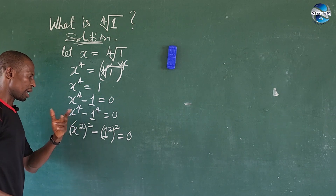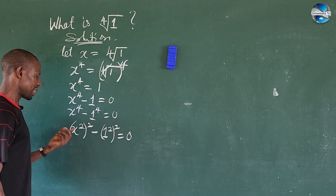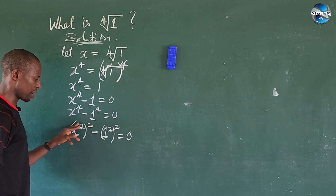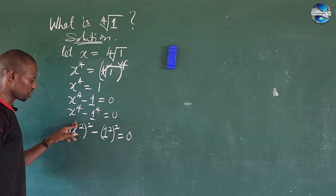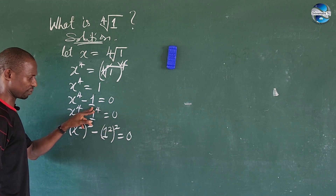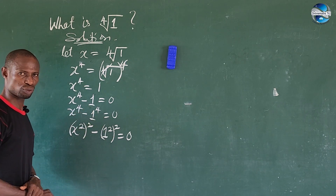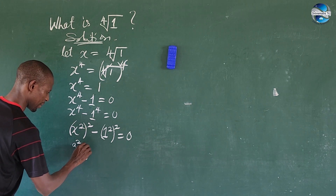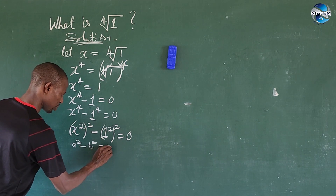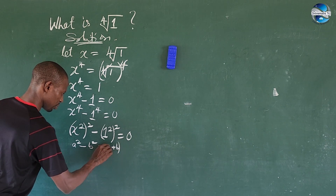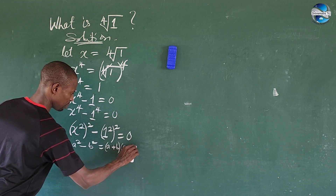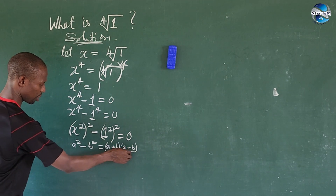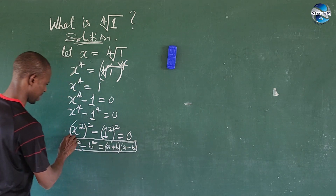If we apply the rule which says that when an entity is raised to a power and further raised to another power, multiply the powers. Now remember the difference of two squares: if you have a² minus b², this is equal to (a + b)(a - b). So if we apply this rule, we can rewrite the expression we have here.